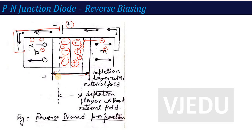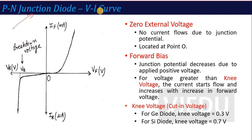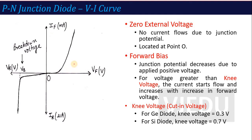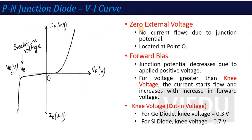Now if we convert this concept into working and the V-I curve — when we apply the battery source, working starts. When we apply zero external voltage, no current flows due to the junction potential and the depletion layer. You increase the voltage but current flow does not happen immediately.